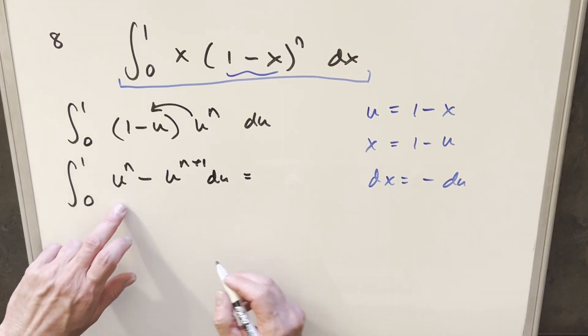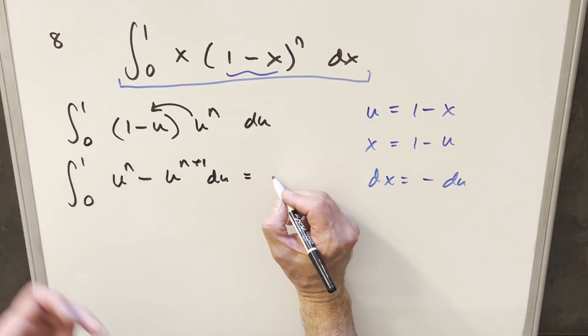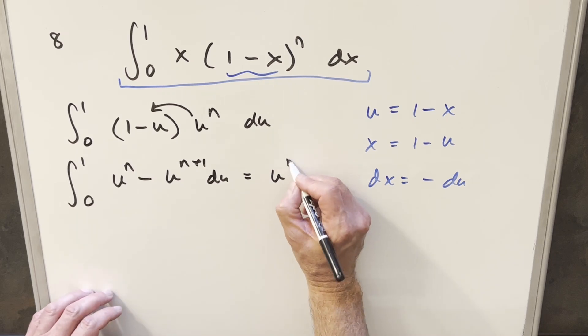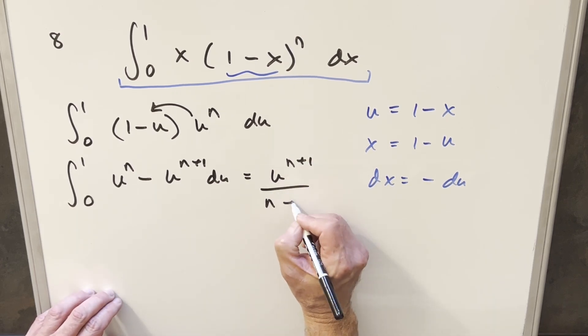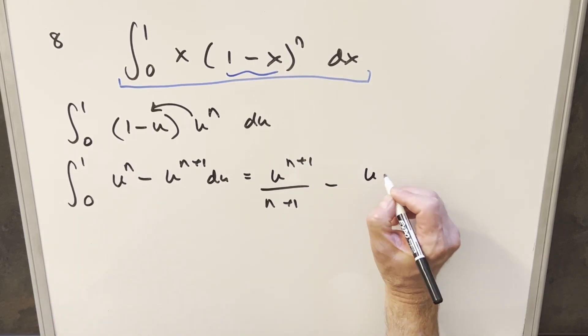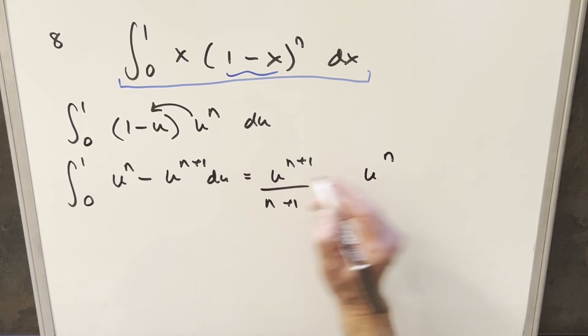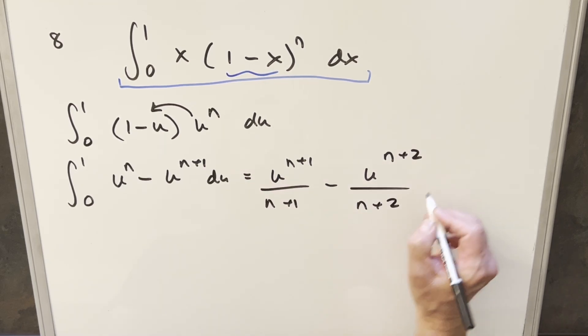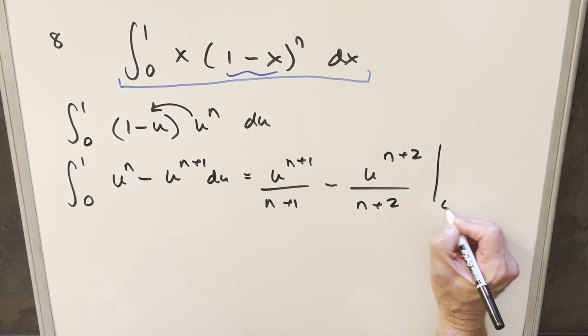But now we can just go ahead and integrate this using power rule. The n is just a constant. So for the first one, it's going to be u n plus 1 over n plus 1. Integrating the second one, it's going to be u plus 1 on the exponent. It's going to be n plus 2 over n plus 2. We just need to evaluate from 0 to 1.